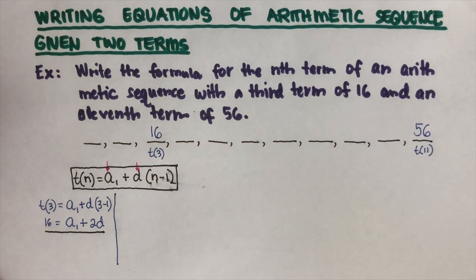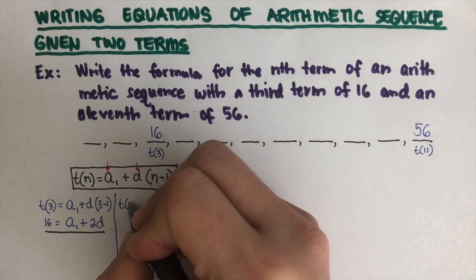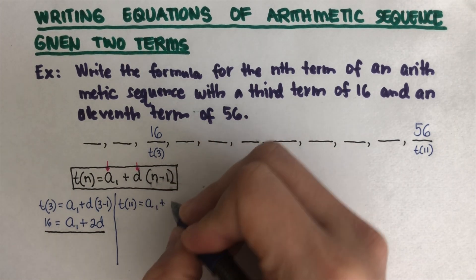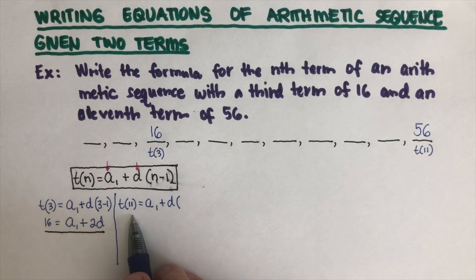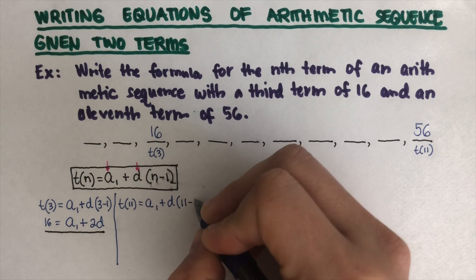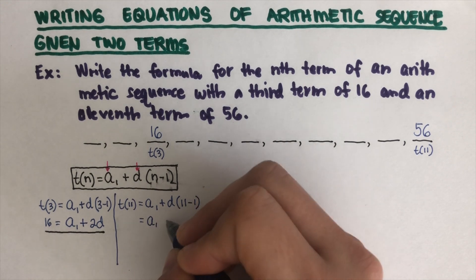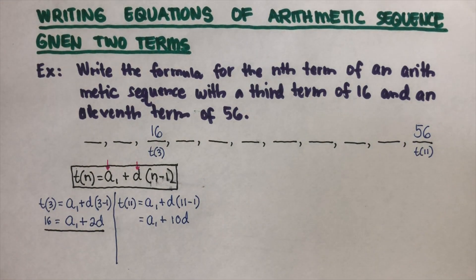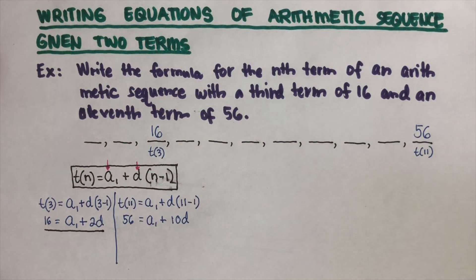Now we use the second piece of information. We write t(11) = a1 + d(11 − 1), which gives us 56 = a1 + 10d, since 11 − 1 = 10. This is our second working equation, because the 11th term is 56.